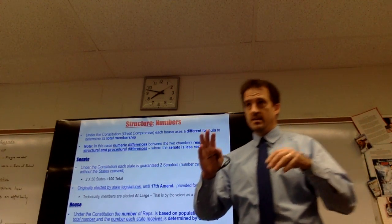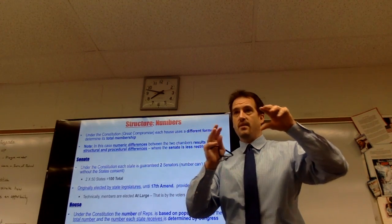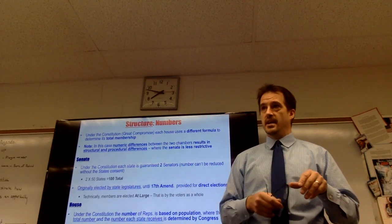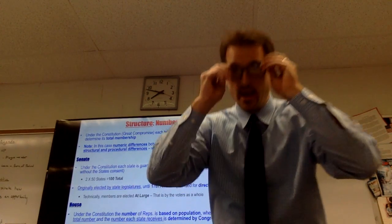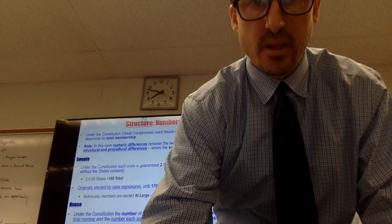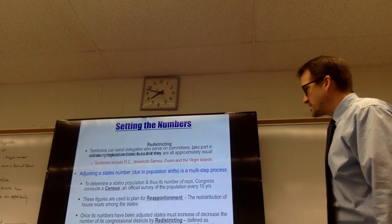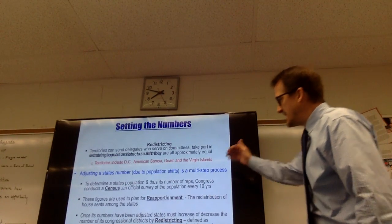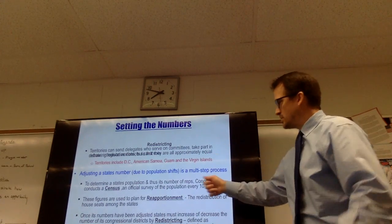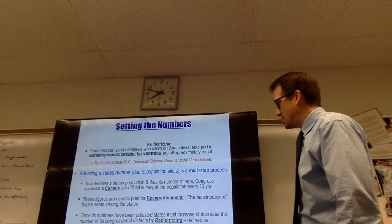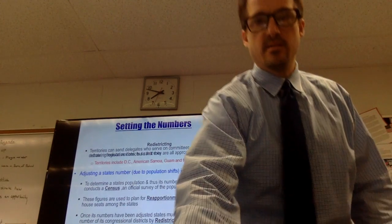Once we've said a state used to have 12 representatives and now has 11, you then have to redistrict — redraw the lines. That's where we left off yesterday. The sequence is: census comes first, then you resort the numbers through reapportionment, and then you redraw your lines through redistricting.